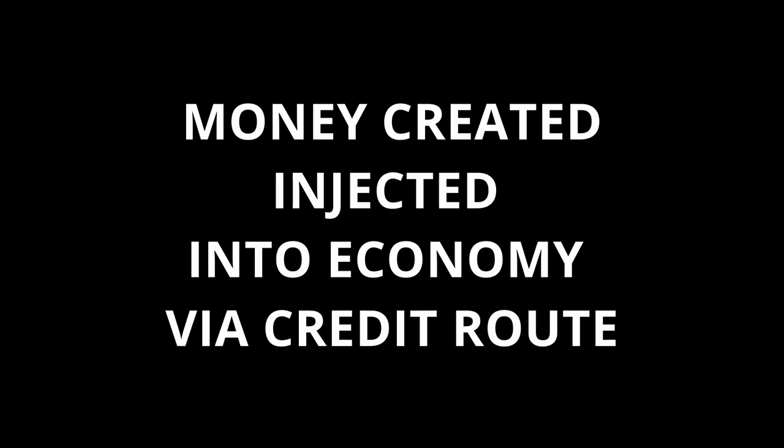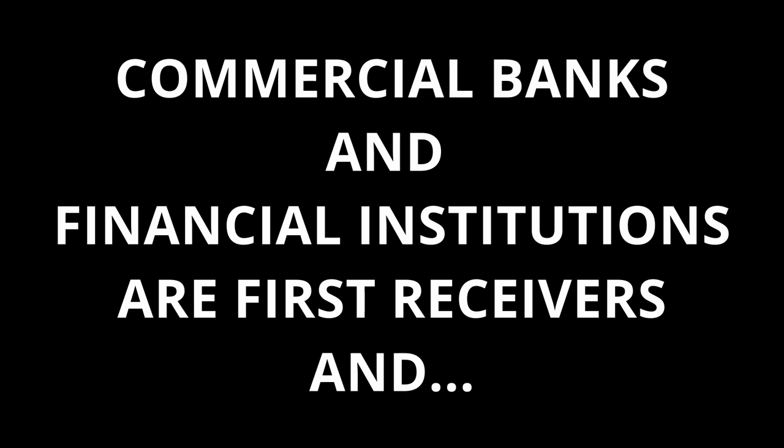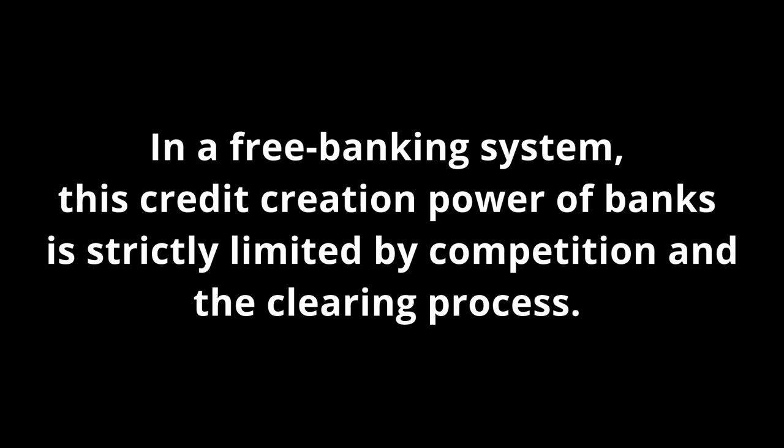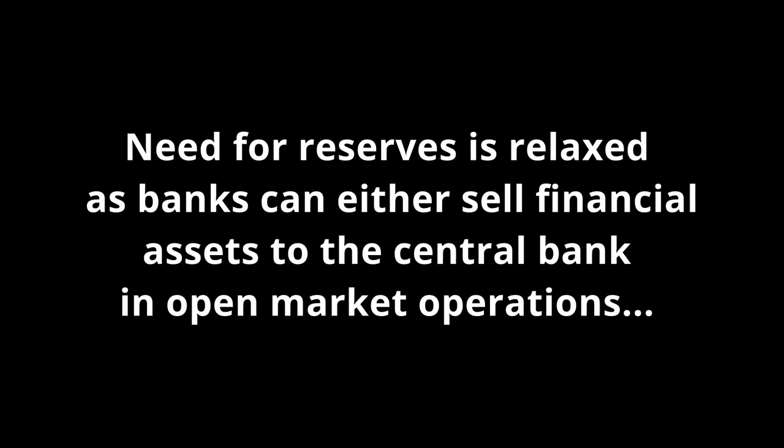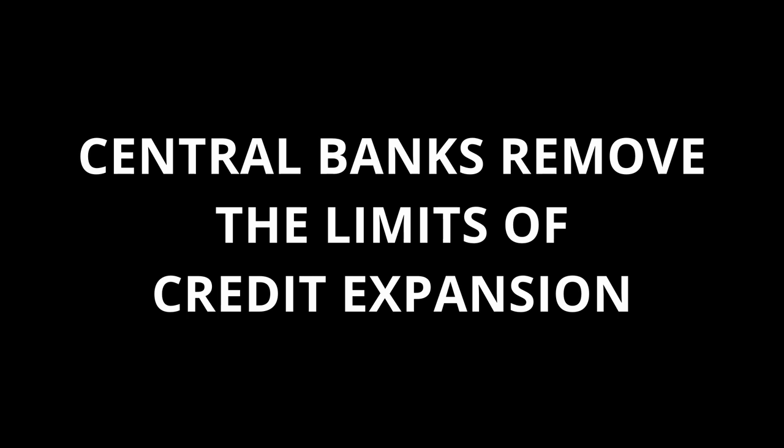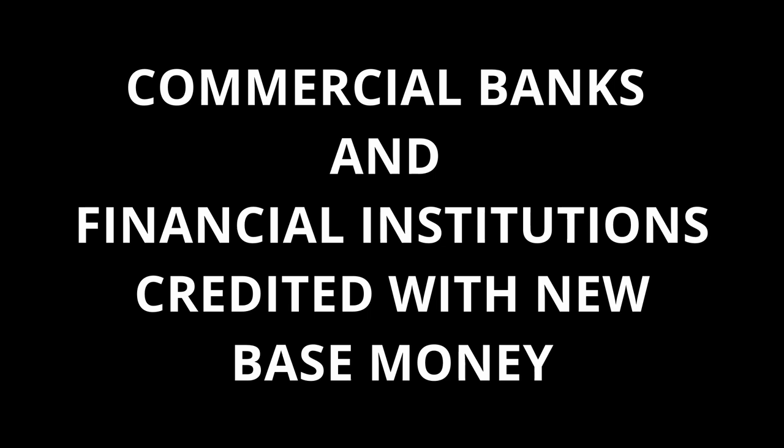Under modern central banking theory, money is created and injected into the economy via the credit route and first affects financial markets. Under this system, commercial banks and other financial institutions are not only the first receivers of the newly created money, but are also the main producers of credit money. This is because banks can grant loans unbacked by base money. In a free banking system, this credit creation power of banks is strictly limited by competition and the clearing process. Under central banking, however, the need for reserves is relaxed, as banks can either sell financial assets to the central bank in open market conditions, or the central bank can grant loans to banks at relatively low interest rates. In both cases, central banks remove the limits of credit expansion by determining the total reserves in the banking system. The commercial banks and other financial institutions are credited with so-called base money that has not existed before.